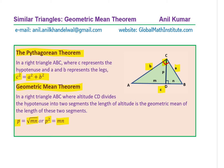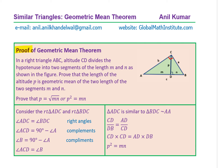Now let's look into the proof of the geometric mean theorem. We have the same triangle where the side opposite vertex A is labeled a, opposite B is b, and opposite C is lowercase c. The altitude CD has length P and divides the hypotenuse into two lengths M and N as shown. We need to prove that P equals the square root of MN, i.e., P squared equals the product of M and N. Let's consider the two triangles: right triangle ADC on the left and right triangle BDC on the right.